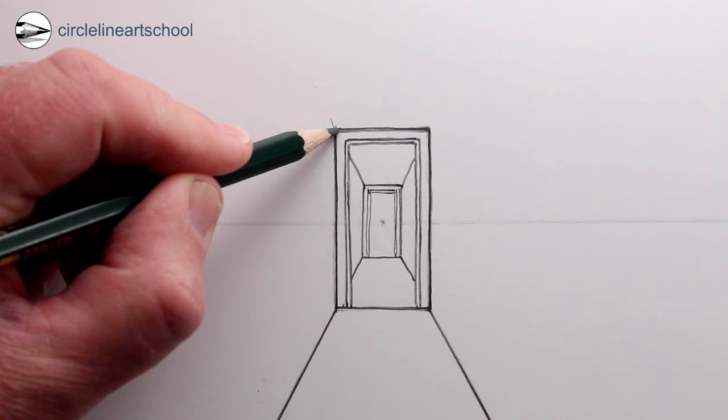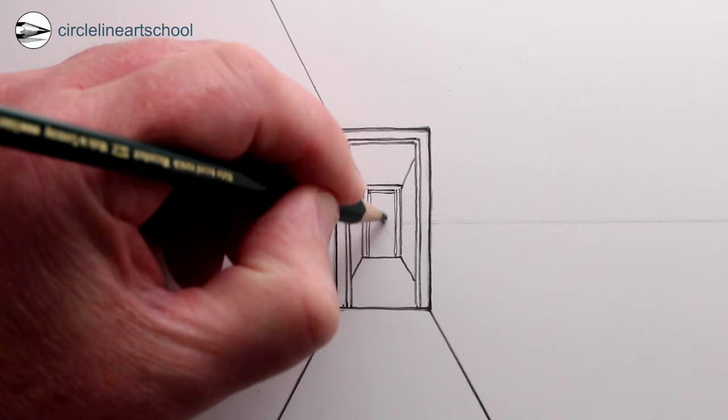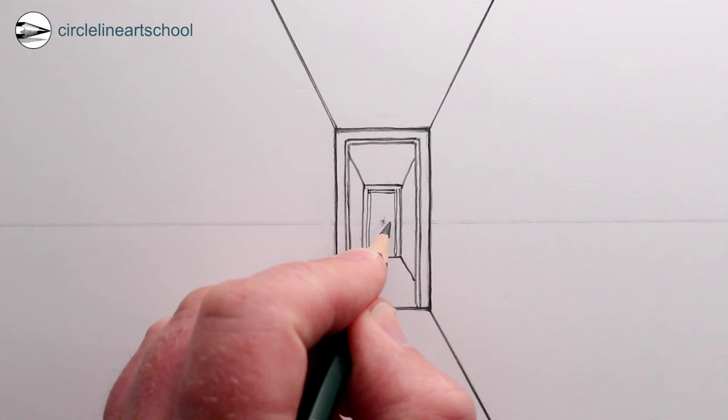Next using the vanishing point we can draw a line from the top left of the doorframe coming towards us, and then another line from the top right of the doorframe coming towards us again.